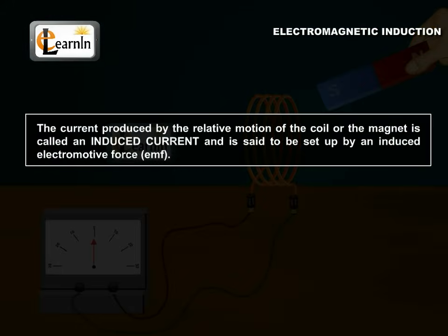The current produced by the relative motion of the coil or the magnet is called an induced current and is said to be set up by an induced electromotive force, EMF.